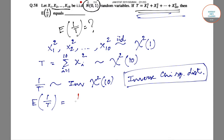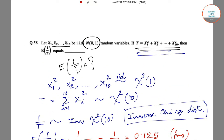This will be 1 by 10 minus 2, that is 1 by 8 or equals to 0.125. So this is our answer. The expectation of 1 by T will be equals to 0.125.